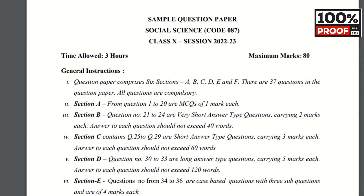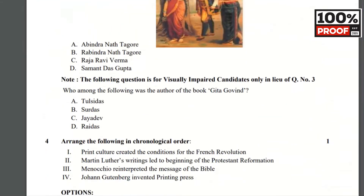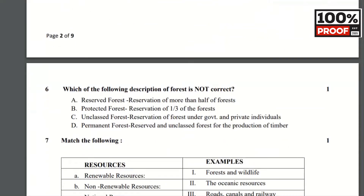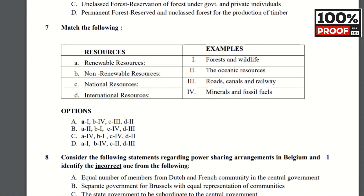So friends, I will show you this is the 2023 sample paper for Class 10. In MCQ Section A, if you see here, Question Number 7 is a match-the-following question from Chapter Number 1, Resources and Development. Here you have resources in one column and examples in the other: Renewable Resources, Non-Renewable Resources, National Resources and International Resources.